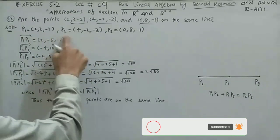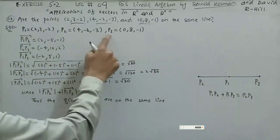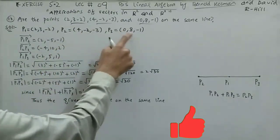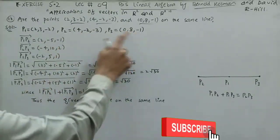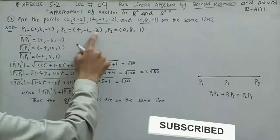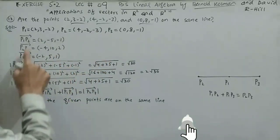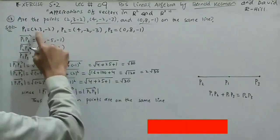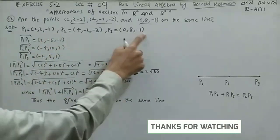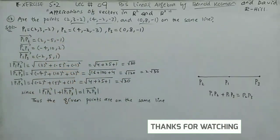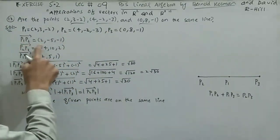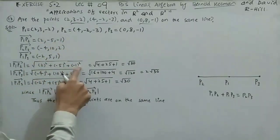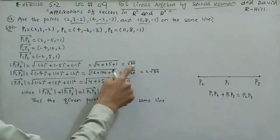Now find the position vector P2P3: final minus initial gives (0-4, 8-(-2), -1-(-3)) = (-4, 10, 2). Now find the position vector P1P3: (0-2, 8-3, -1-(-2)) = (-2, 5, 1). Now find the magnitude of P1P2: √(2² + (-5)² + 1²) = √30.